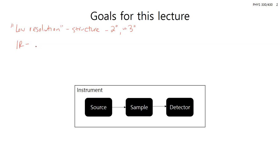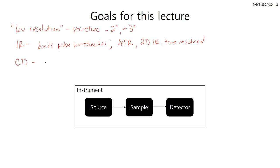For IR spectroscopy, we'll cover the different components, the physics behind it, how it works, which bonds it probes in biomolecules, and some of the more advanced techniques — such as attenuated total reflection, two-dimensional infrared spectroscopy, and time-resolved IR. For CD or circular dichroism spectroscopy, that'll be a shorter part of the lecture covering the instrument components. An important takeaway with CD is unit conversion — understanding what the units mean and how they're reported.